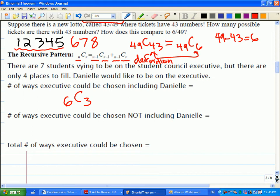What if we say, don't include Danielle? 6C4. So Danielle's still not in the choices, but now I have to pick all four from the remainder.